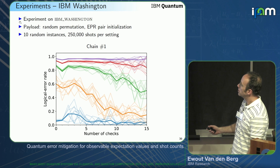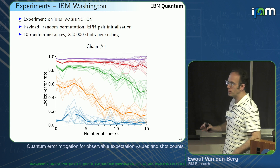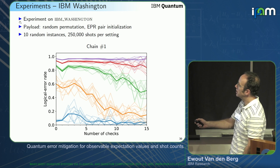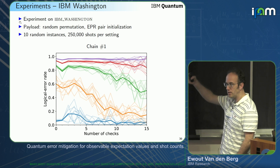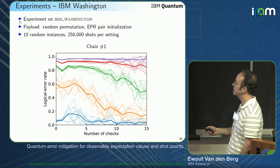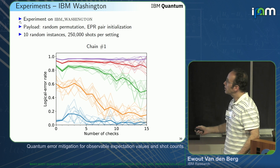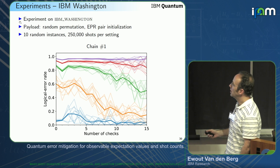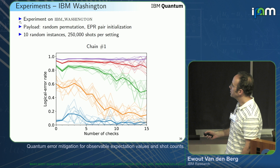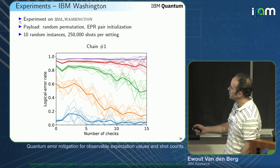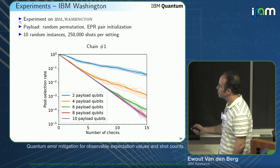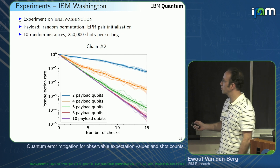Another example: the payload is a random permutation of qubits. To make it interesting, we initialize the qubits with EPR pairs — so every pair of qubits has an EPR pair — meaning after a random permutation there might be long-distance correlations. Ten random instances, a lot of shots, and again the error rate goes down, though not as much for larger settings.